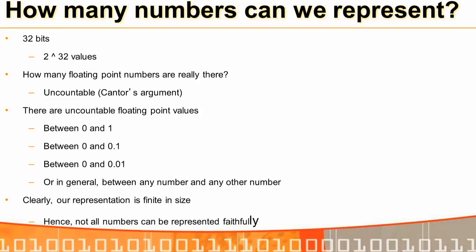With 32 bits we can represent only 2³² values. But floating point numbers are uncountable — between 0 and 1, between 0 and 0.1, we can keep subdividing infinitely. The real number line is continuous while our representation is finite. So we have infinite floating point numbers but only a finite size to represent them.